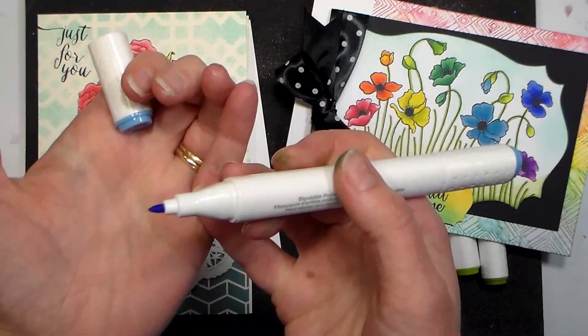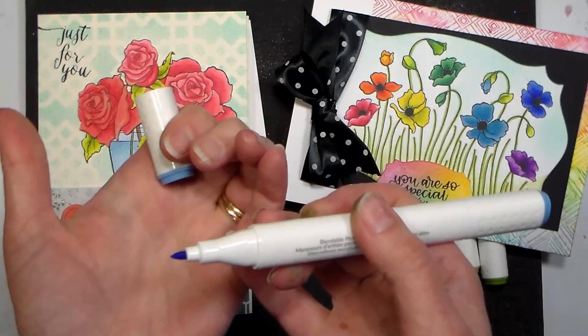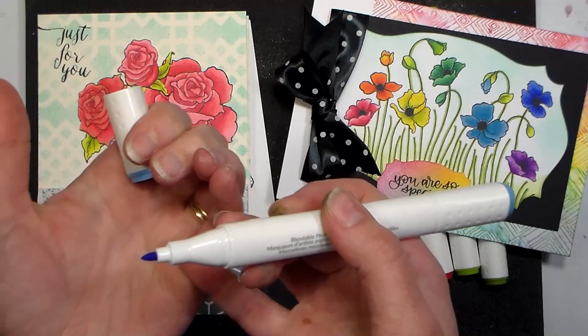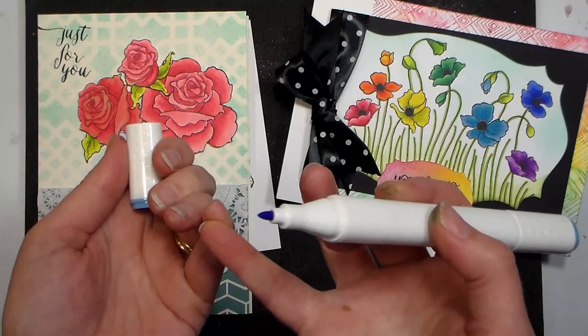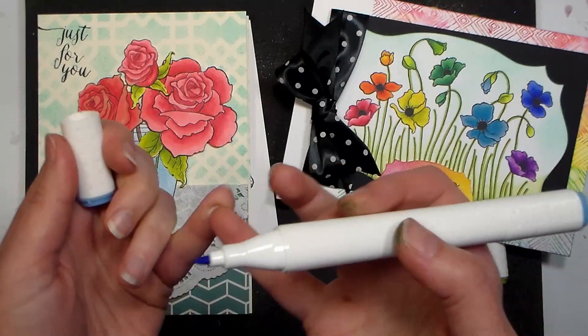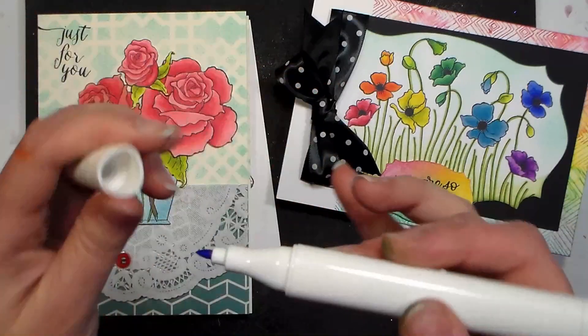which is very similar to the chisel nib in Copics and most of your comparable art markers. And then you've got a bullet nib, which is very similar to the bullet nibs that come in your art markers, a little bit finer than like a Sharpie or Bic marker, but it's pretty much the same as your Prismacolor, Spectrum Noir, Promarker - the same bullet nib that those would have.